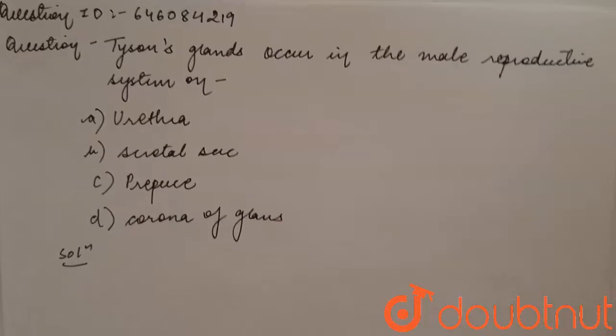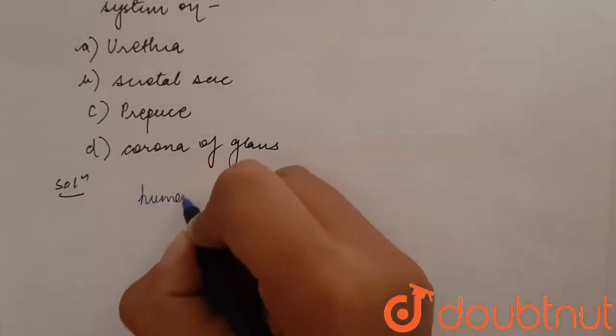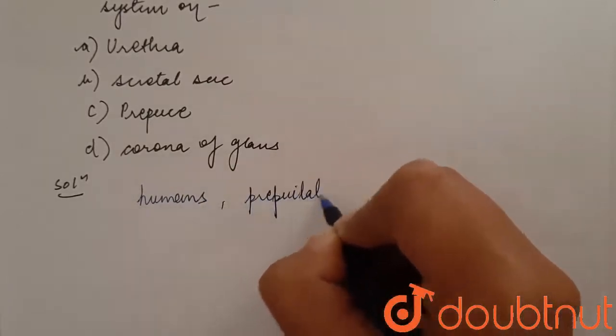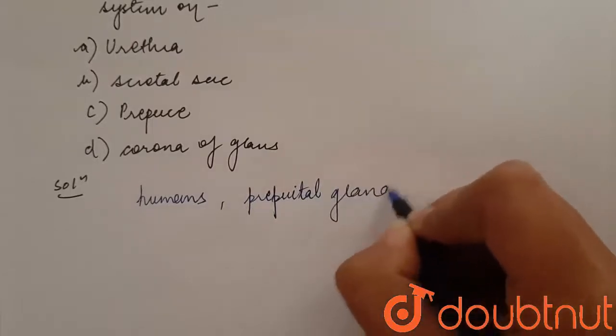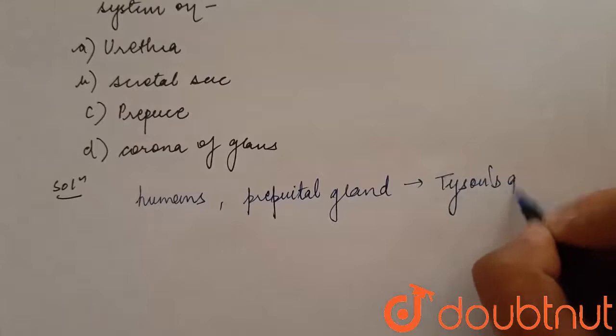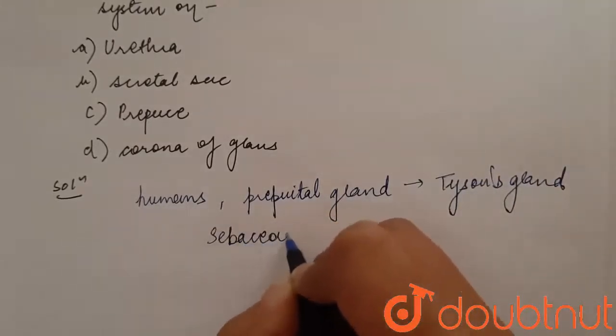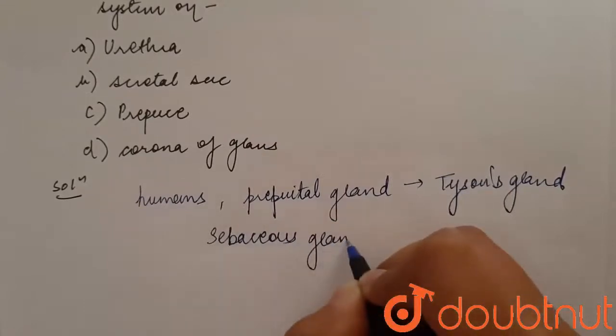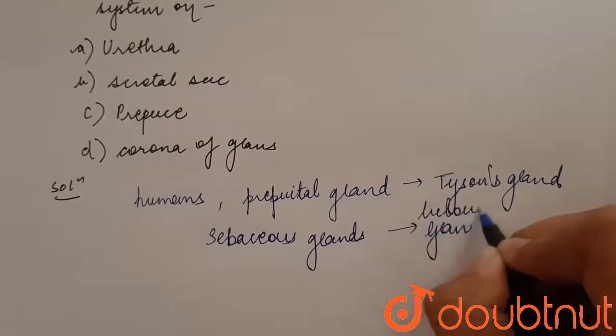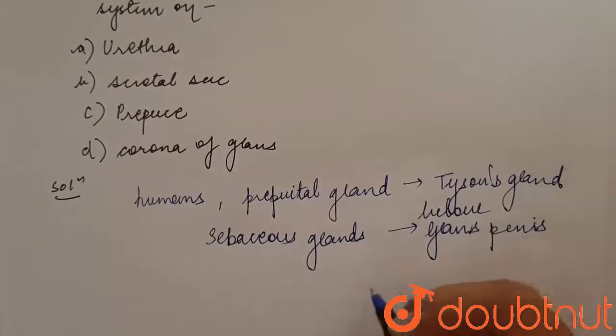Students, in humans, prepucial glands are also known as Tyson's gland. These are sebaceous glands which are present below the glans penis in the prepuce or the foreskin.